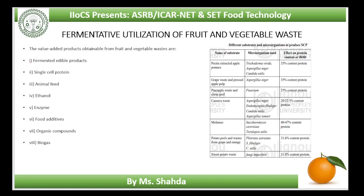Animal feed: the waste obtained from processing of fruits and vegetables is rich in fibre but poor in protein content. Owing to their low protein content and low digestibility, these are poor sources of animal feed. The feed value can be increased through substrate fermentation technique. For example, pectin-extracted apple pomace using Trichoderma viridae results in 35% protein content.